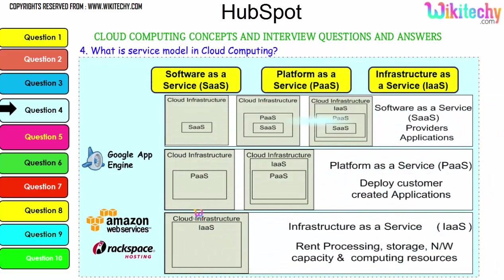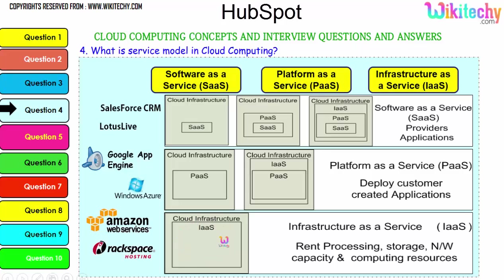To explain further: with SaaS, the cloud infrastructure includes software placed on an operating system within the infrastructure. With PaaS, you're given a platform OS on a server — you can put any application or software you want on it. With IaaS, you're given a bare server and can install whatever OS and applications you want. Examples: SaaS includes Lotus Live and Salesforce CRM; PaaS includes Windows Azure and Google App Engine; IaaS includes Amazon Web Services and Rackspace hosting.